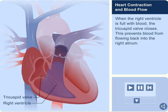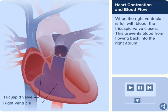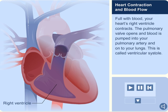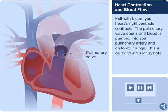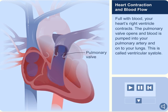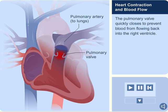When the right ventricle is full with blood, the tricuspid valve closes. This prevents blood from flowing back into the right atrium. Your heart's right ventricle contracts. The pulmonary valve opens and blood is pumped into your pulmonary artery and onto your lungs. This is called ventricular systole. The pulmonary valve quickly closes to prevent blood from flowing back into the right ventricle.